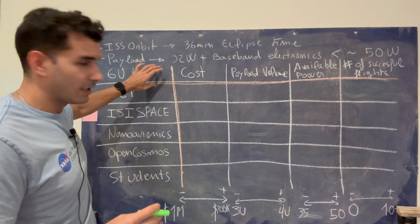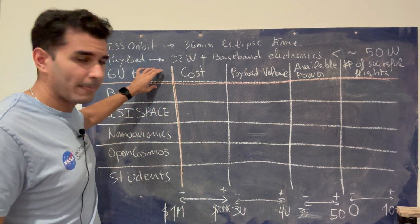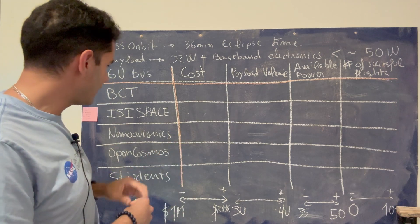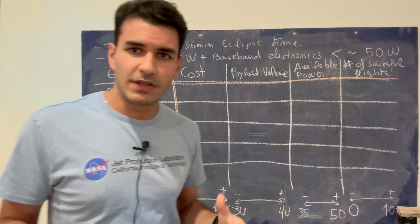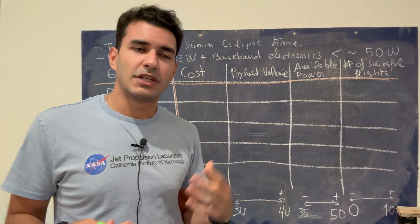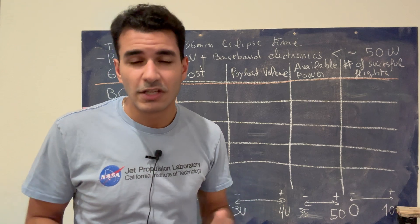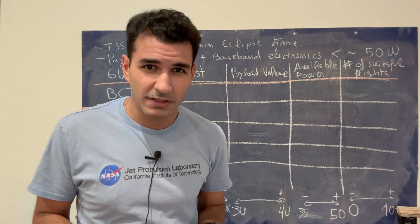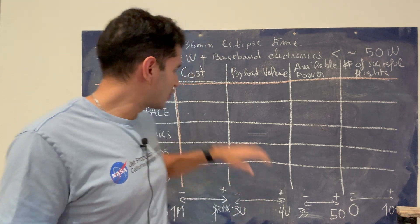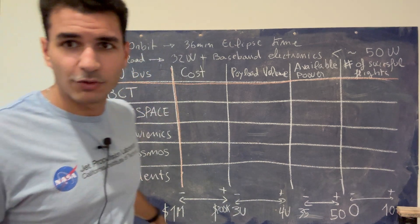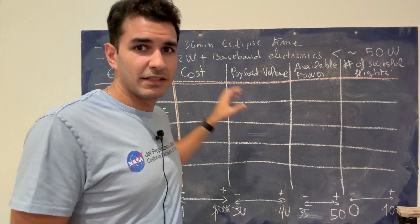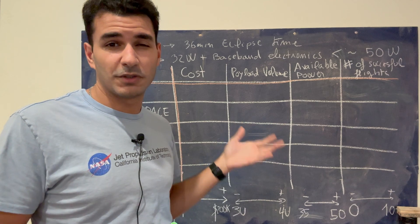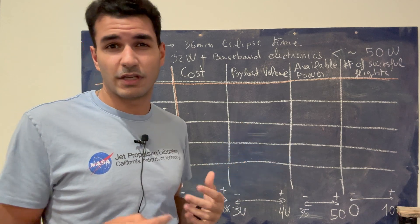So what you see over here is a table. This table is a very simple concept that is used in engineering. It's called a trade study — or you may have also seen something called a decision matrix. It's basically just listing the options that we have and seeing what the variables involved are, and then based on these variables, we assign scores and we run with it.